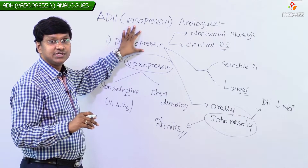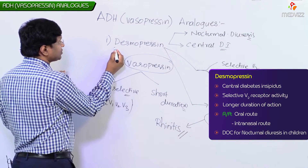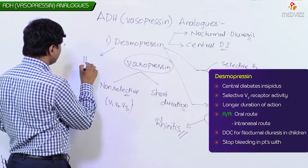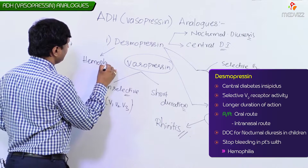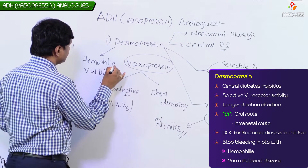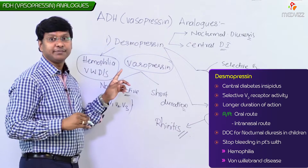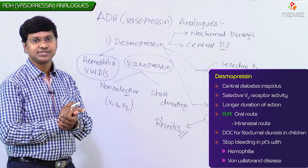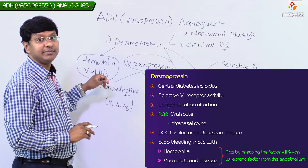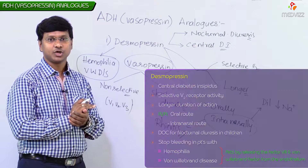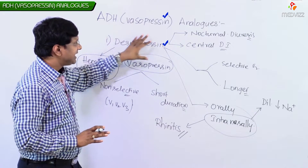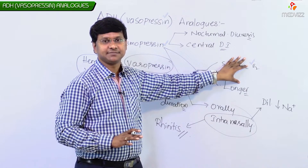Another V2 receptor-mediated action of Desmopressin is that it is used for stopping bleeding in patients with Haemophilia and von Willebrand disease. It acts by releasing Factor 8 and von Willebrand factor from the endothelium. So Desmopressin is a vasopressin analogue with selective V2 receptor activity.